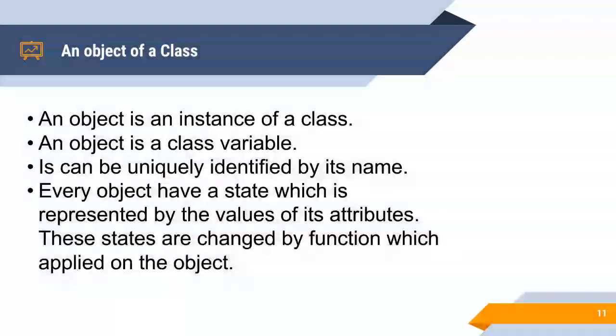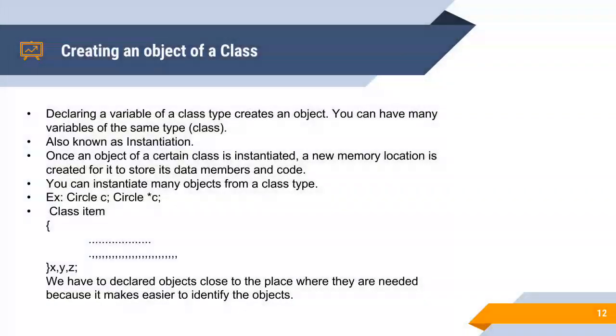An object is a class variable. It can be uniquely identified by its name. Every object has a state which is represented by the values of its attributes. These states are changed by functions which are applied on the object.